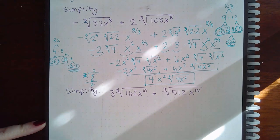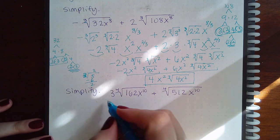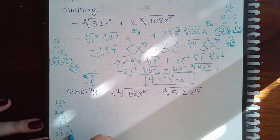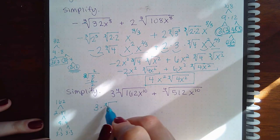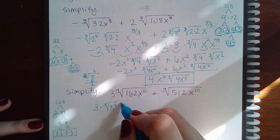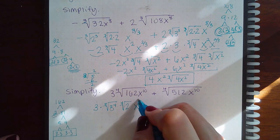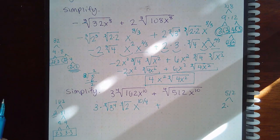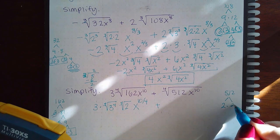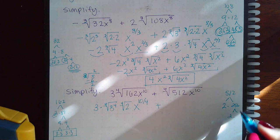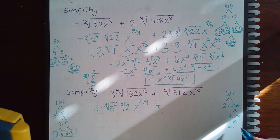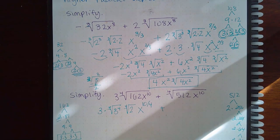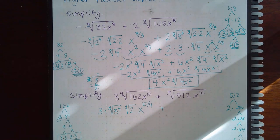Let's simplify another one — this one is very similar but uses the fourth index instead of the third. I'll take 162, which is 2 times 81, then 9 times 9, 3 times 3, 3 times 3. I need a group of 4 — I do have one, but I also have one prime left over, so I get the fourth root of 2. Then x to the 10 over 4. For 512: divided by 2 is 256, divided by 2 is 128, divided by 2 is 64, divided by 2 is 32.